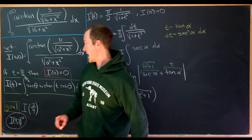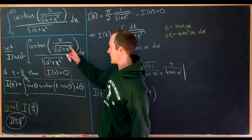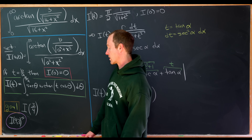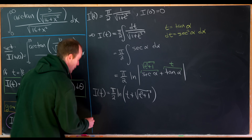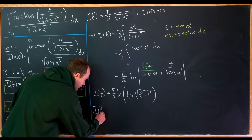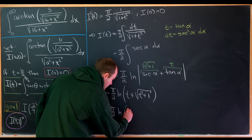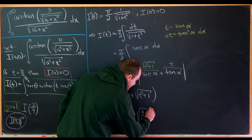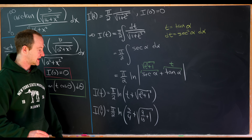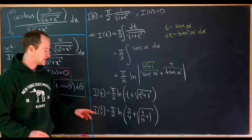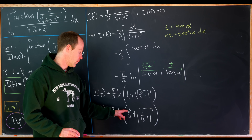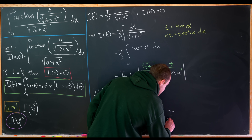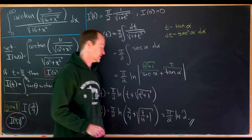We could write down a general formula for this two-parameter integral by setting t equal to b over a, but let's specialize to our case: t equals 3 over 4. I(3/4) equals pi over 2 times the natural log of 3/4 plus the square root of 9/16 plus 1. Since 1 equals 16/16, we get 9 plus 16 equals 25, whose square root is 5/4. So 5/4 plus 3/4 equals 8/4 equals 2, giving us pi over 2 times the natural log of 2.